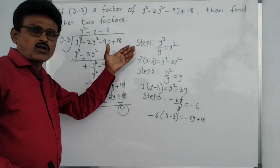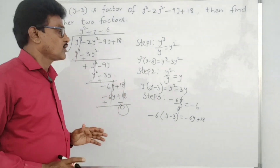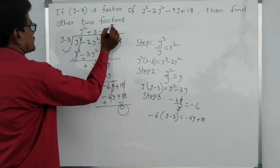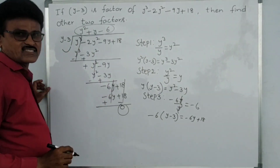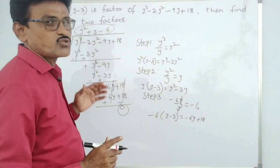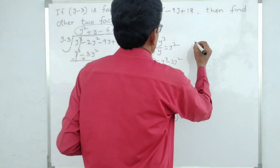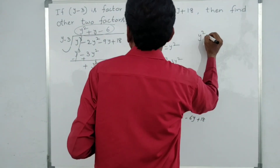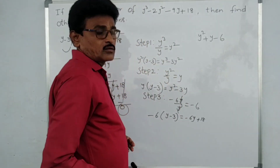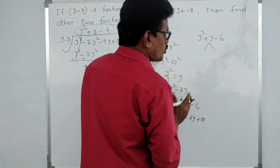Since y minus 3 is a factor of the polynomial, we are getting remainder zero. The next step: the quotient y² plus y minus 6 is a second-degree quadratic polynomial. We have to split this into two factors.